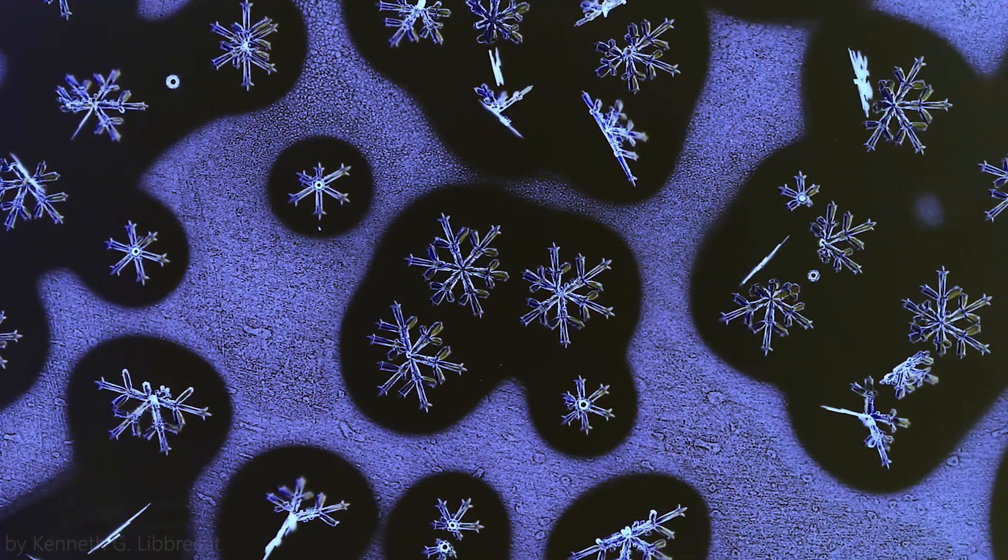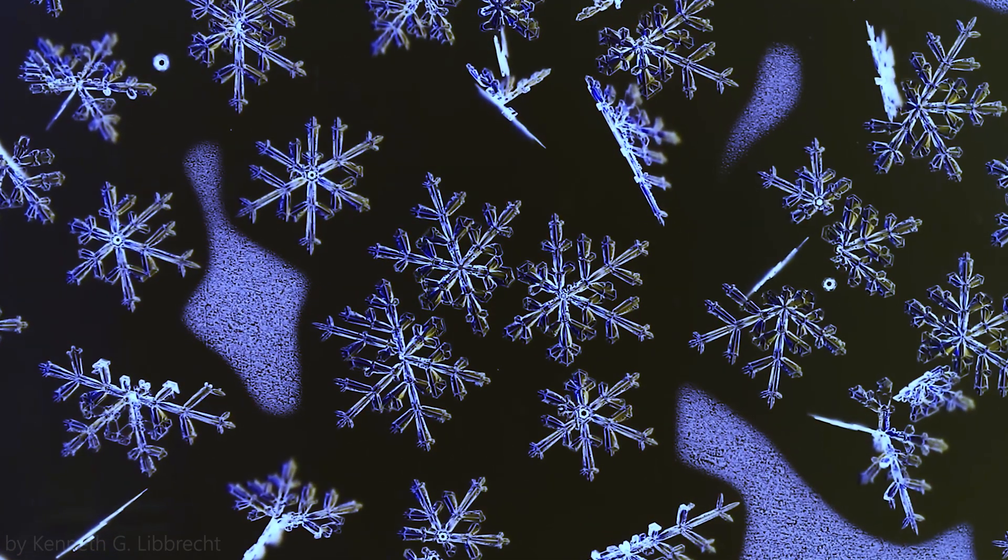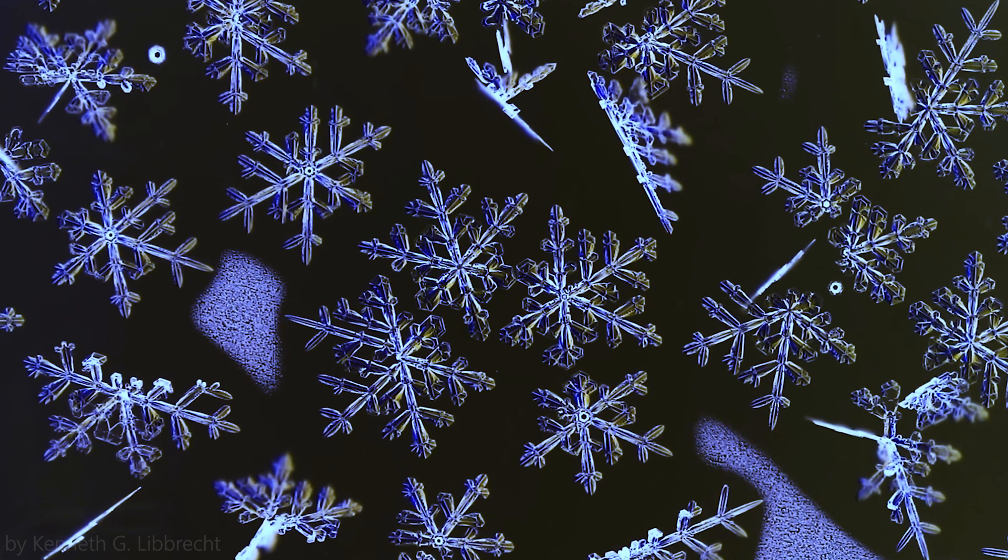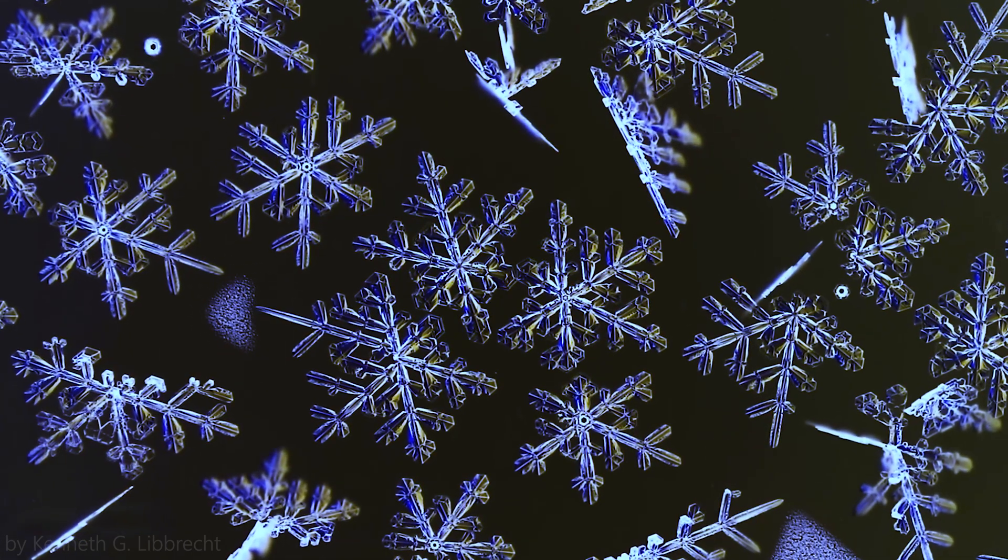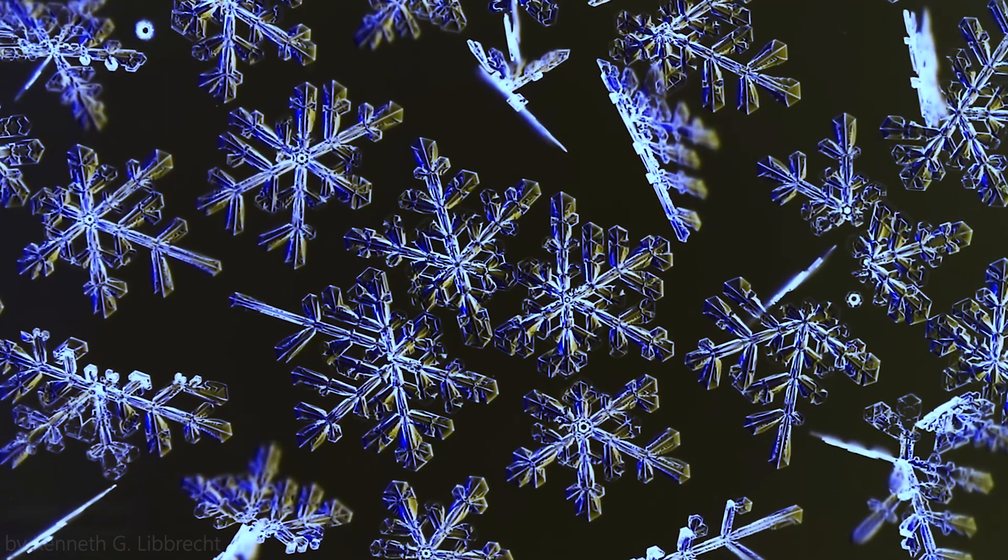The more complicated answer is that snow crystal growth is based on particle diffusion and this can produce a branching instability. In order to keep growing, the molecules have to diffuse through the air from the surrounding medium where its supersaturation is high, and if these points stick out a little farther into the supersaturated medium.